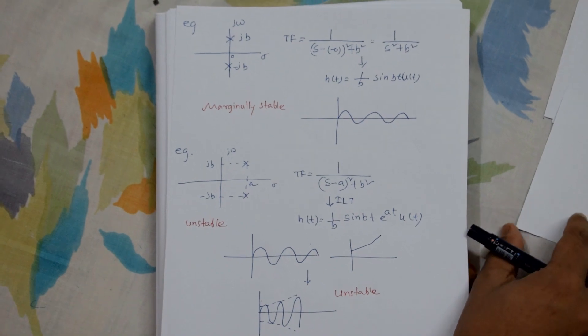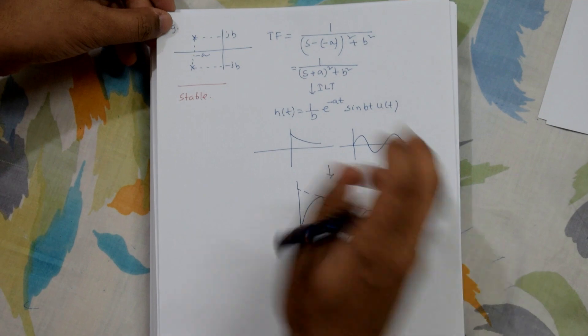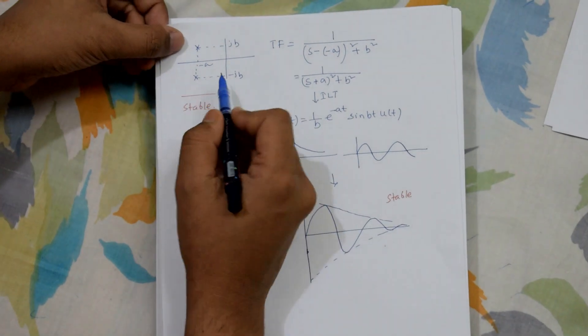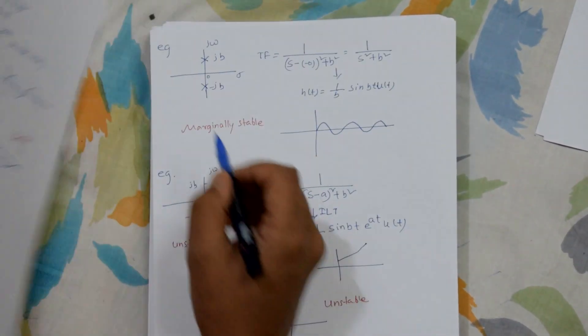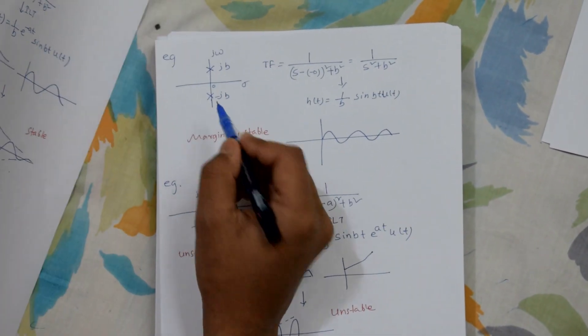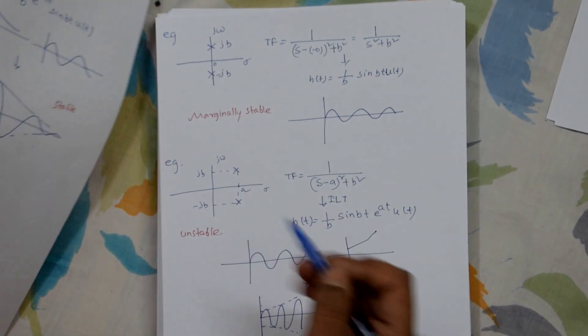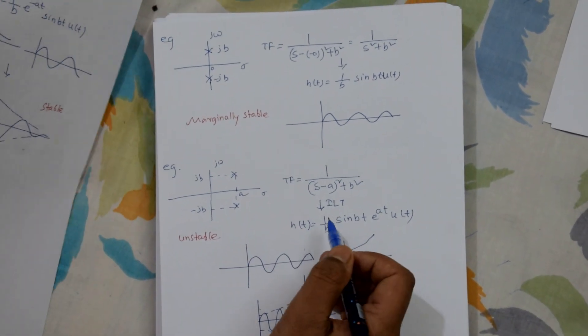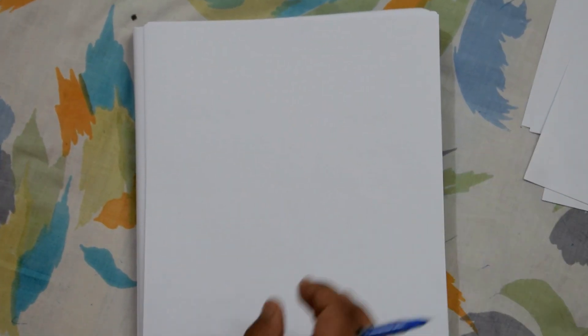So for complex poles also: if they are in the left-hand side of the s-plane it is stable; if on the jω axis it is marginally stable; and if on the right-hand side it is unstable.